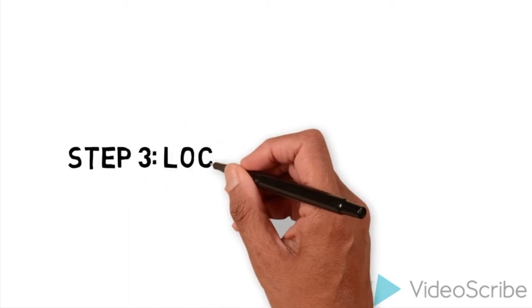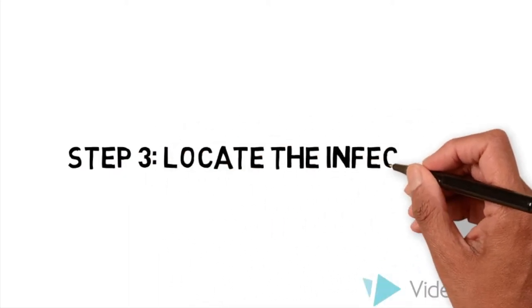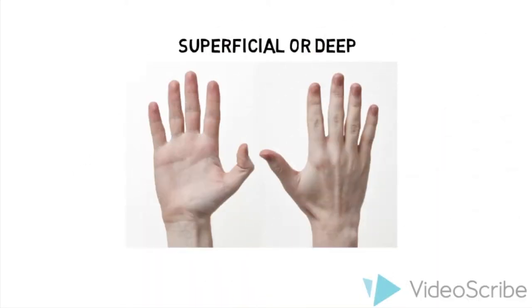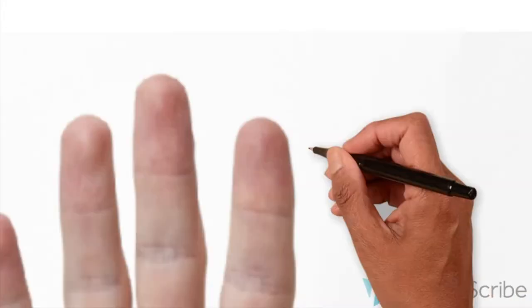Once one has determined that there is a likely infection of the hand, one needs to decide where it is exactly. Is it on the superficial or deep surface? Is it palmar or dorsal? Does it involve the fingers, nails or the pulp of the hand?